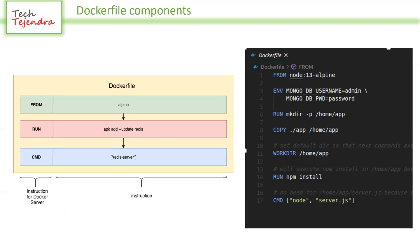A Dockerfile has two parts: one is the instructions for the Docker server, and the other part is the actual instructions. Let's look at a very simple Dockerfile example. The FROM instruction tells the Docker daemon to load a base image — here the image name is 'node' with the tag '13-alpine'. Then we set two environment variables with their names and values.